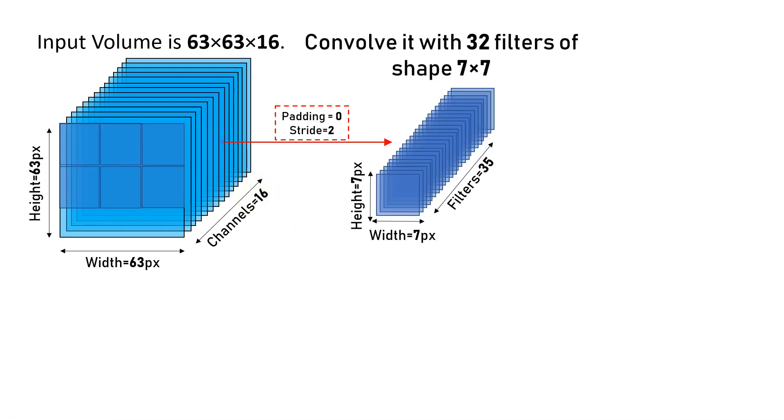We have to make a convolution with 32 filters which has a shape of 7 by 7. As you can see, it's 7 in height and 7 in width, and we have 32 filters in this step.